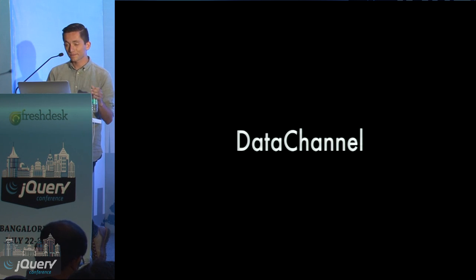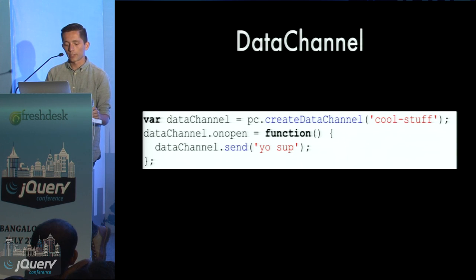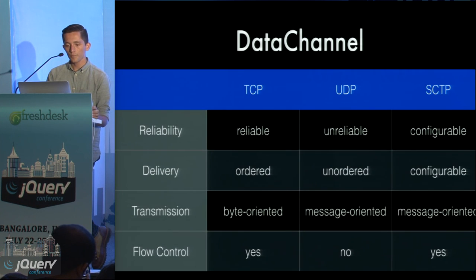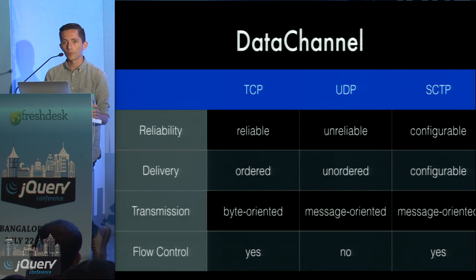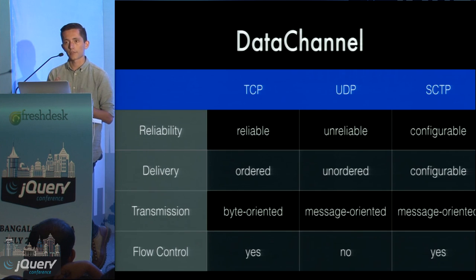If you want a channel for arbitrary data — not just video and audio — you can create a data channel on the PeerConnection prior to sending the offer. With a data channel between the two peers, you're able to send strings and array buffers exactly like a WebSocket, but without going through a central server. Data channels give us the ability to configure transport settings via SCTP for each channel. In a multiplayer game, for example, you might want chat messages on a reliable channel, but player movement on a lower-latency unreliable channel, since there's another packet right behind it.